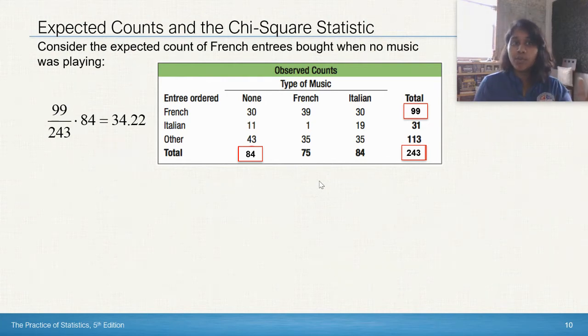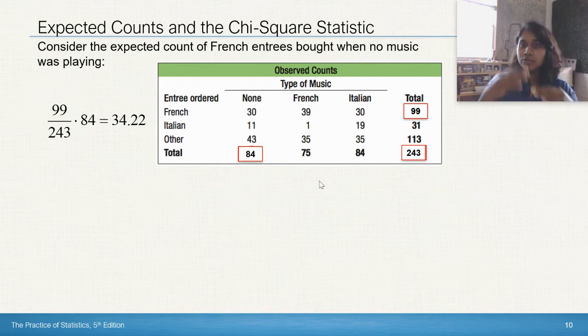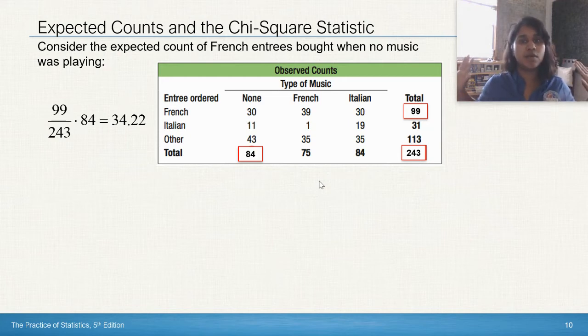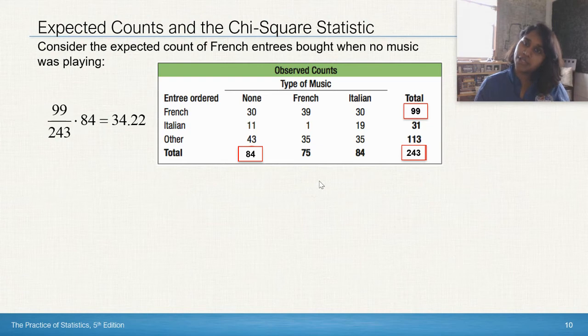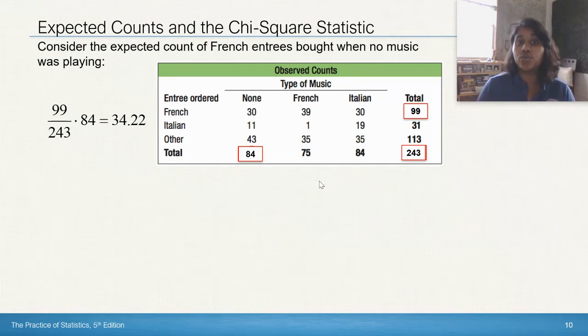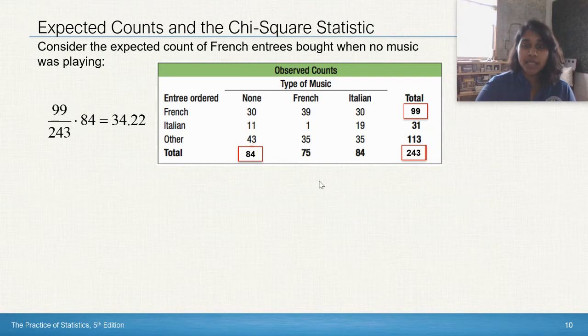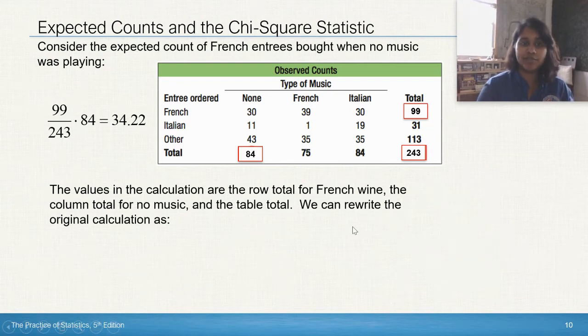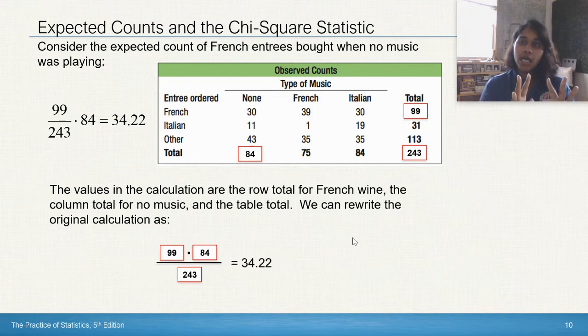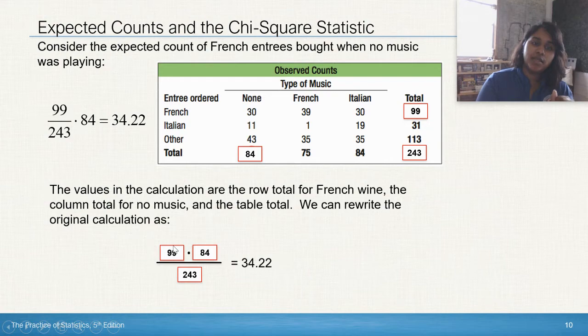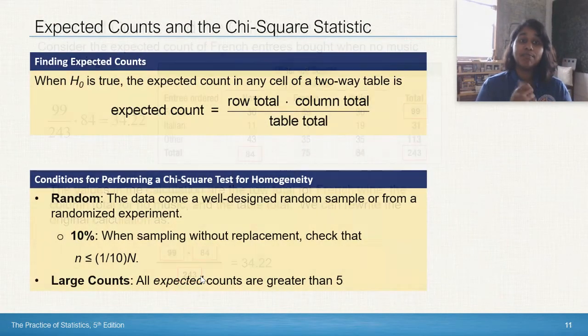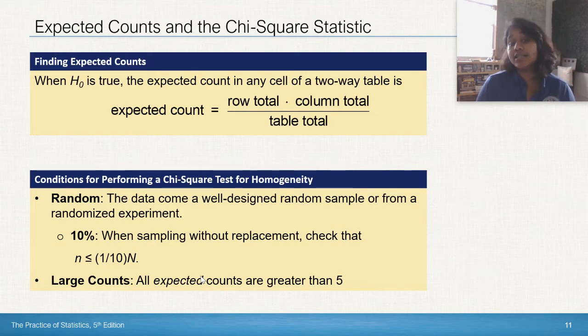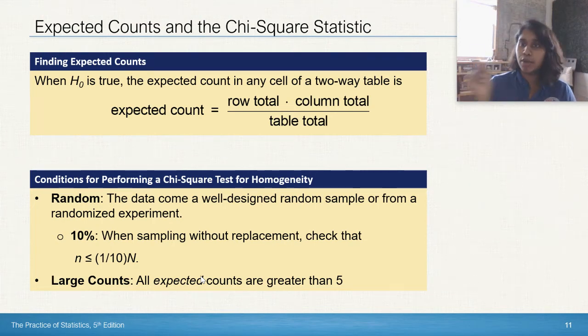Let's do the math. So we know the observed values, but we don't know the expected count. If I know that the total number of French items ordered in the restaurant was 99 and the total number of dishes ordered in the restaurant was 243, and I also know the total number of entrees ordered when no music was played, then I can figure out the expected count of French entrees bought when no music was played. Let's watch a little animation so we can rewrite that formula. A little bit of rearranging, and we notice something. We end up with the row by the column divided by the total. The expected count formula for a two-way table is literally going to be your row times your column total divided by the table total for each and every one of those little parts of your table.